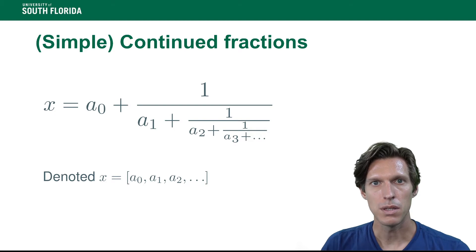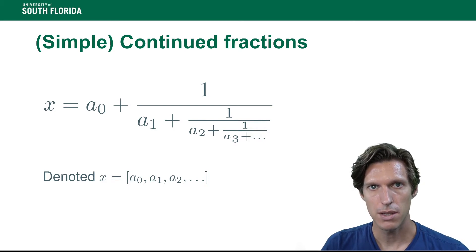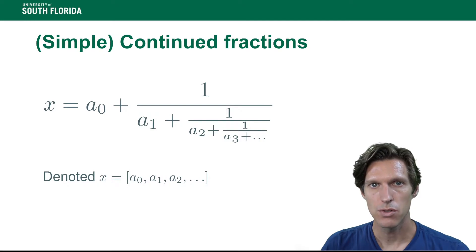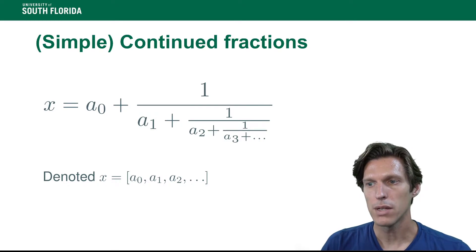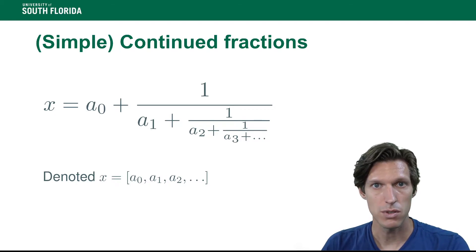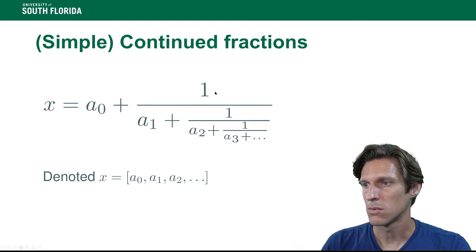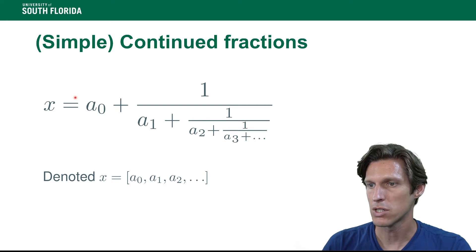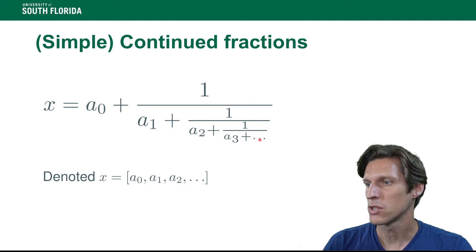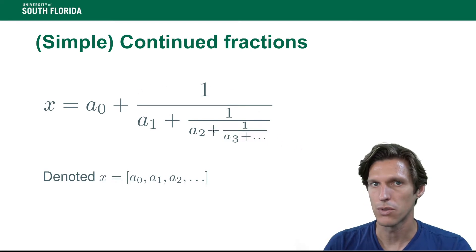Another attack we present is based on continued fraction expansions. A continued fraction expansion is a way to write a fraction: you write a rational number in this nested form, and you can generalize by taking infinite writings of this form. Given coefficients a_0, a_1, a_2, ..., the simple continued fraction expansion defined by those coefficients is this limit, where we can have an infinite sequence. If the sequence is finite, we get a rational number.